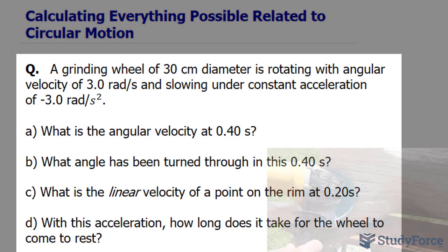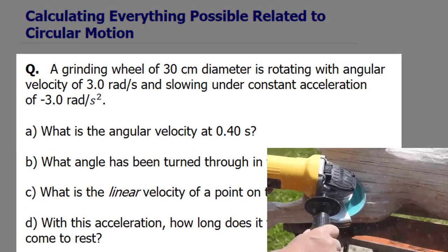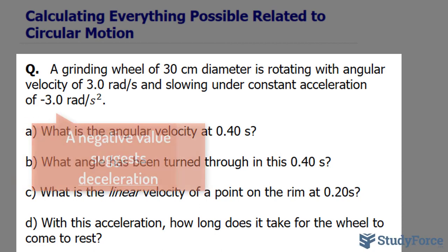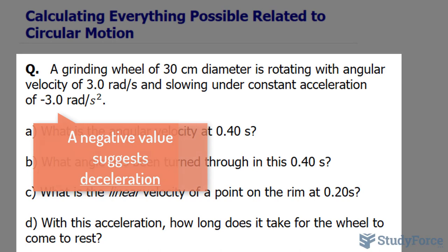The question reads, a grinding wheel of 30 centimeter diameter is rotating with angular velocity of 3.0 radians per second and slowing under constant acceleration of negative 3.0 radians per second squared.